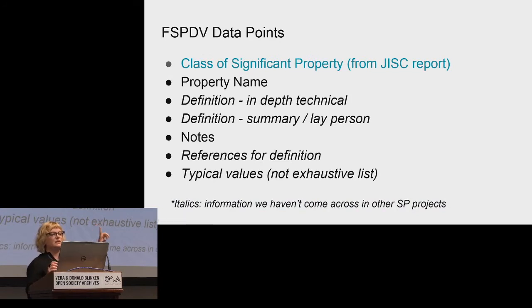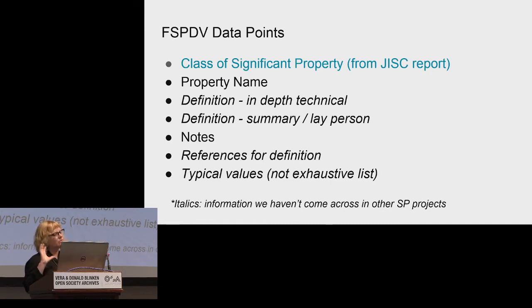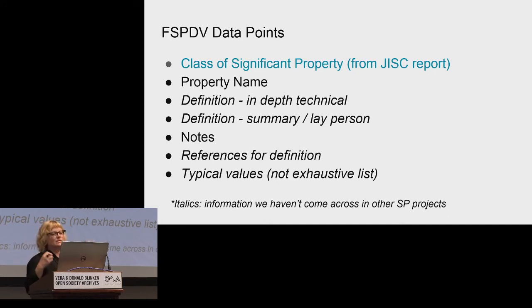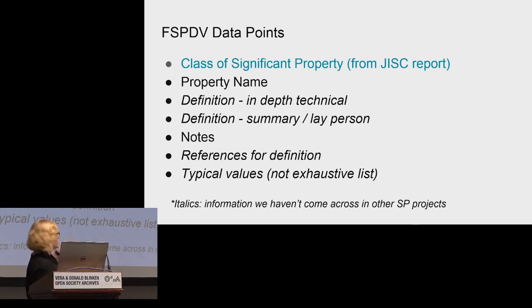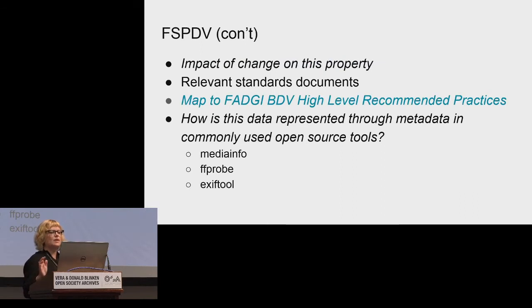FSPDV is arguably a worse acronym than FADGI, but only marginally. These are the data points we came up with — the ones in italics are ones we haven't come across in other significant properties projects. We define each by the class of significant properties from the original JISC report. We have two levels of definition: an in-depth technical definition and one for a layperson. Our audience is really beginner to mid-level practitioners, not engineers. We also have lots of references, and one of the most important parts is typical values.